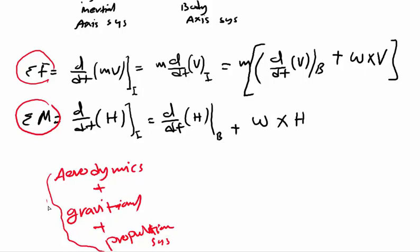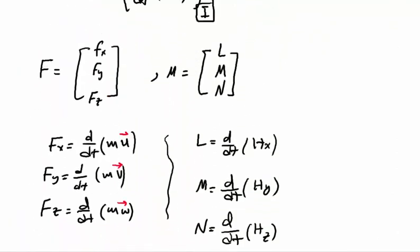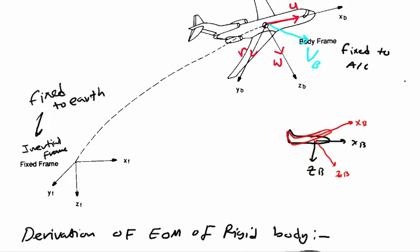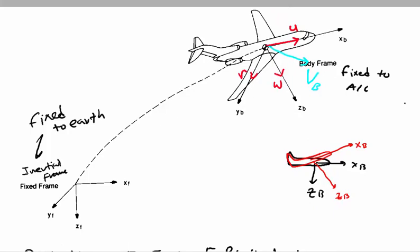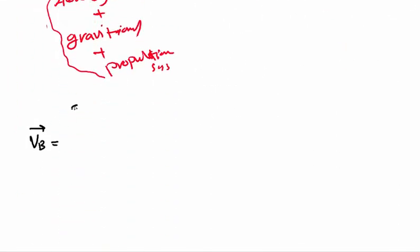Along the body axis there are three velocity components u, v, and w.